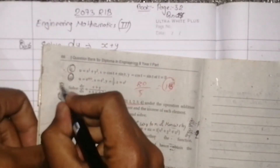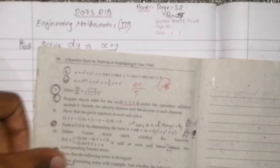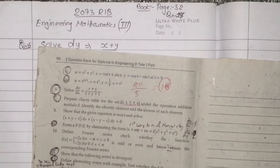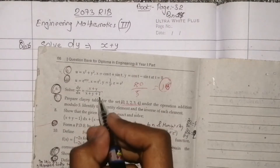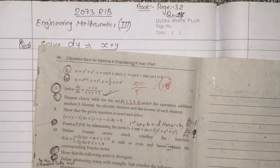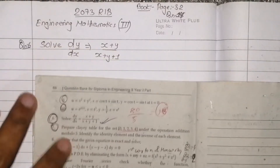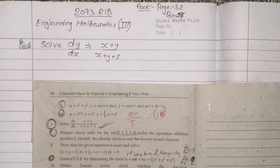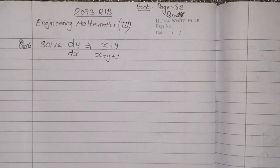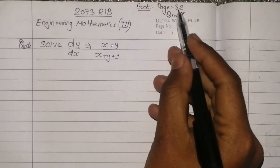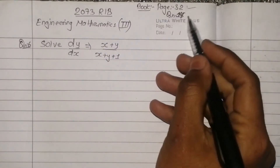We will solve: dy/dx is equal to (x + y) upon (x + y + 1). This is page number 30, question number 14.